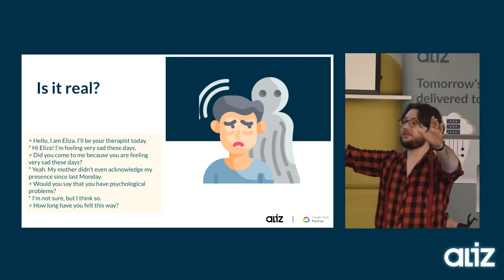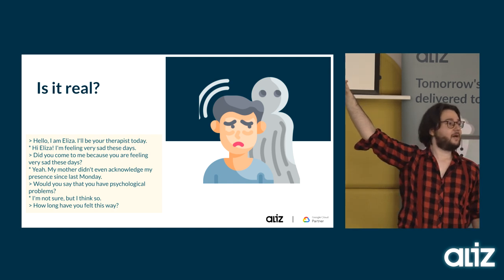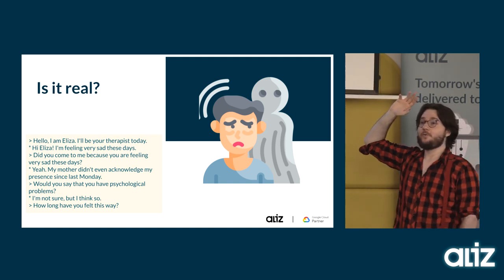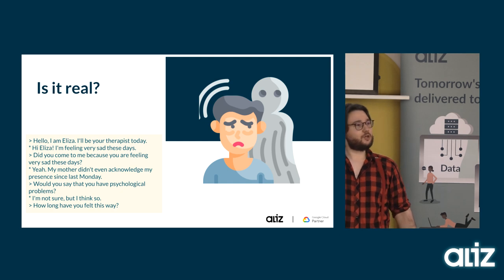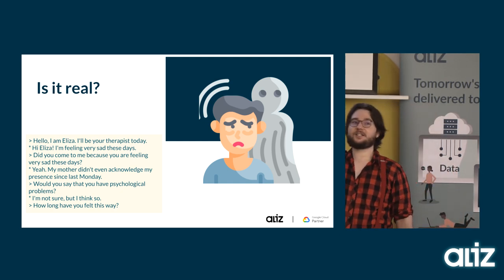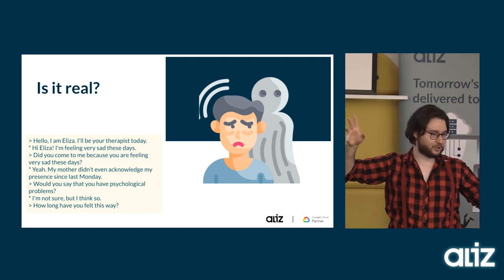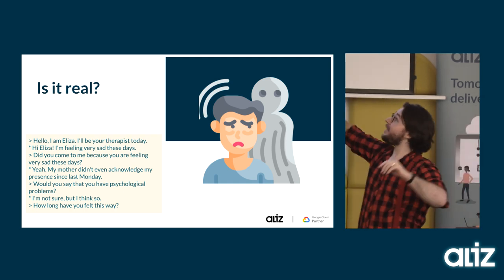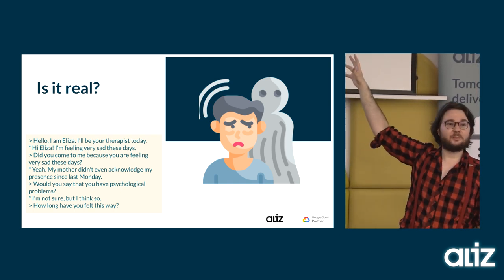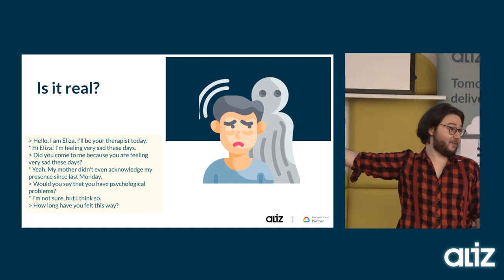We're starting with a question. There is a conversation up there, and the question is very simple: was this conversation between two humans, or was it between a human and some sort of algorithm? This is a conversation with Eliza — a chatbot developed in 1966, which is a long time ago.